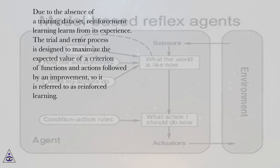Due to the absence of a training data set, reinforcement learning learns from its experience. The trial and error process is designed to maximize the expected value of a criterion of functions and actions followed by an improvement, so it is referred to as reinforced learning.